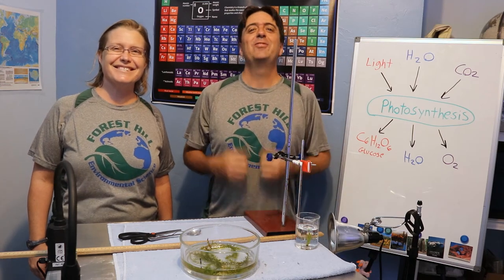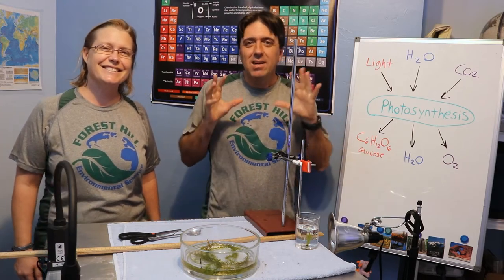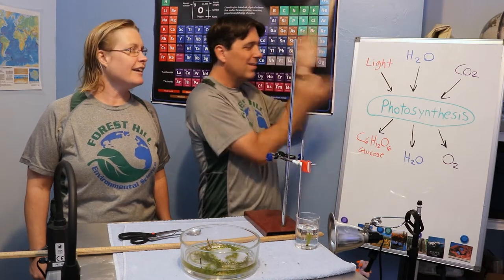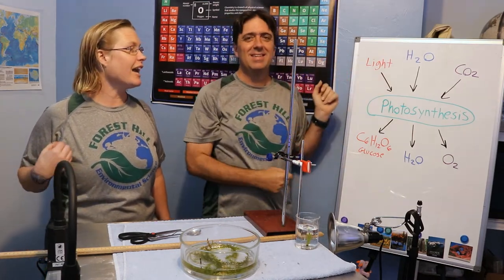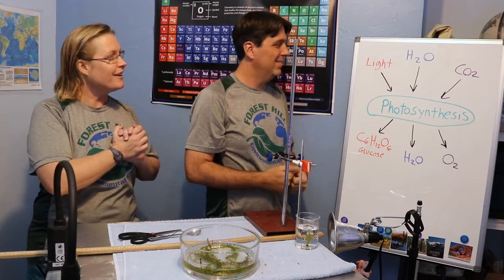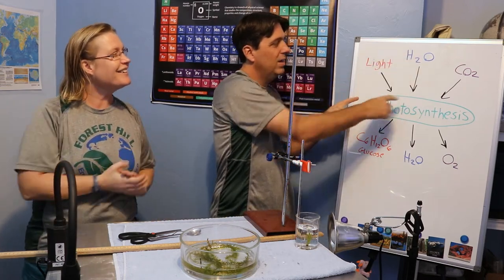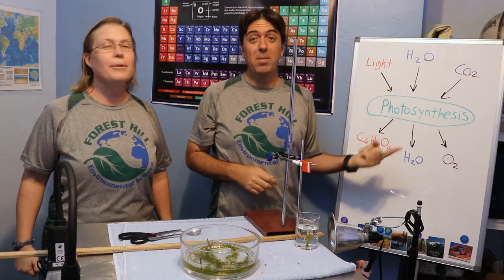Welcome to the rate of photosynthesis lab. Today we are going to investigate the components of photosynthesis, including the reactants and products. Everything starts with light when it comes to photosynthesis — everything has to happen in the presence of light. Then of course we input water and carbon dioxide.